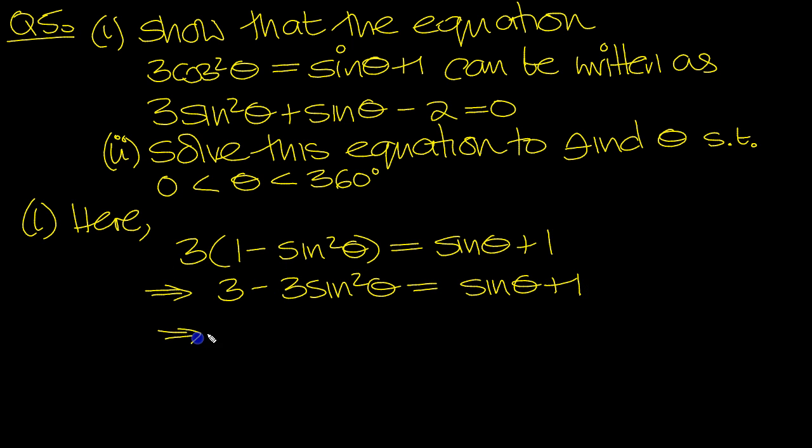Just expanded the bracket and move everything over to the right-hand side. So we get 3sin²θ when it's moved over plus the sinθ that's already there. Move the 3 over to minus 3. 1 - 3 is -2. There's nothing left on this side, so equals 0. So I've written it down from right to left.